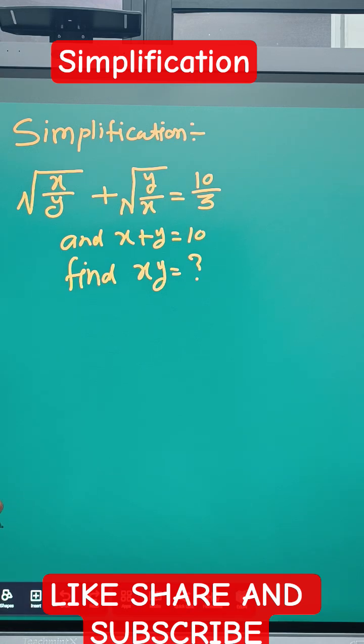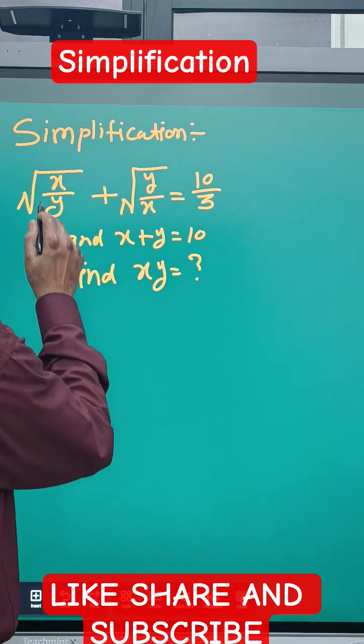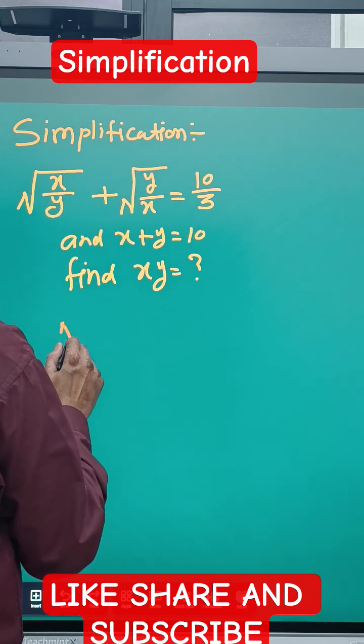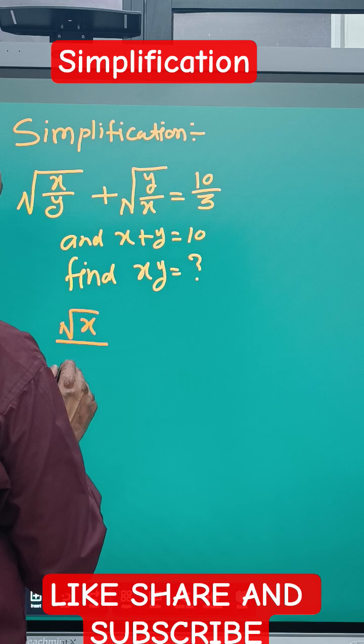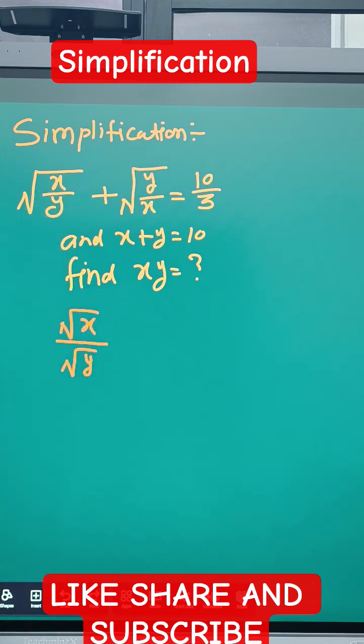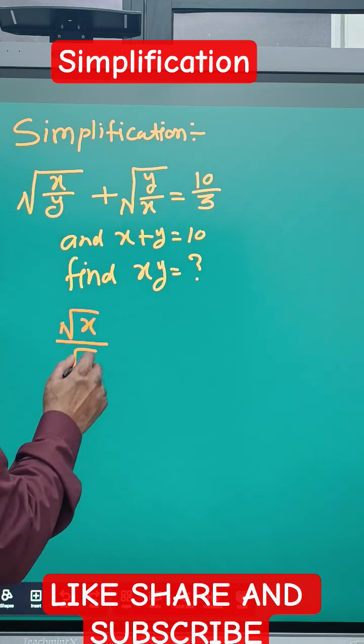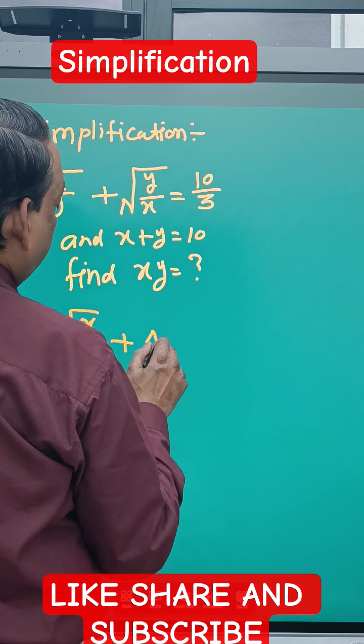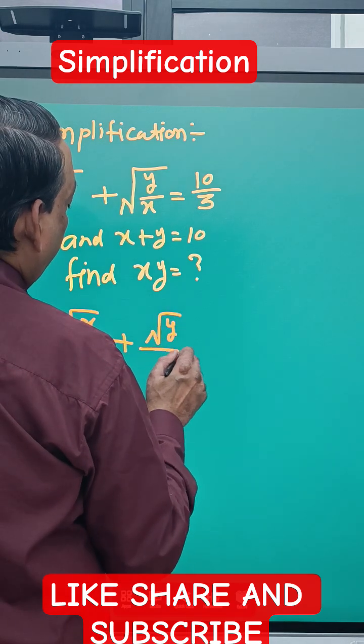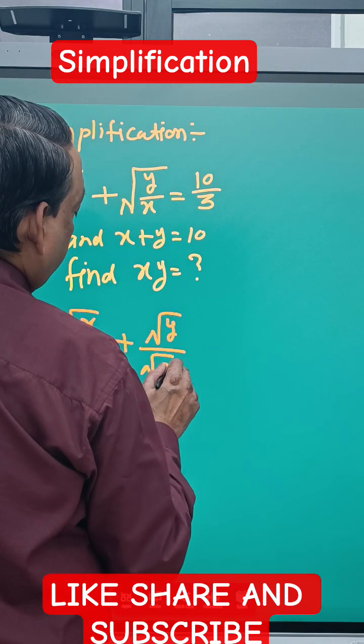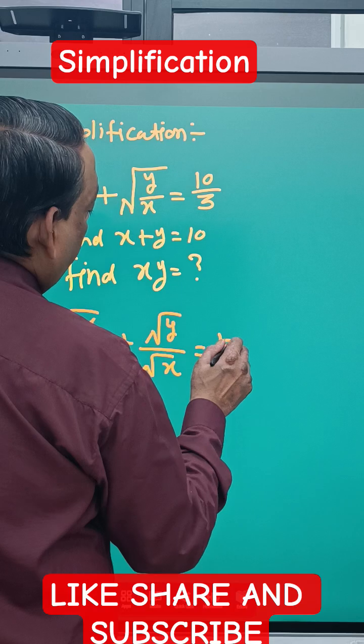First, we'll write this in simplified form. √(x/y) becomes √x/√y, and similarly √(y/x) becomes √y/√x. So we have √x/√y + √y/√x = 10/3.